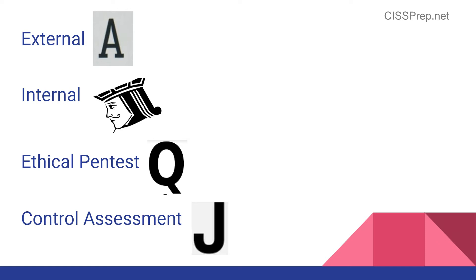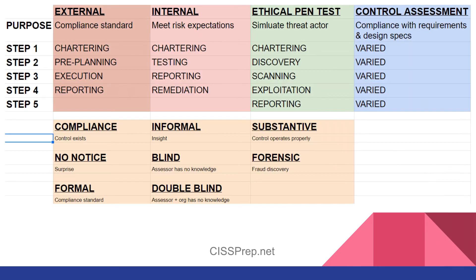You do have to be a little bit flexible when looking at exam questions — this is not an exact science. For example, ethical pen tests are almost always external, so you have to pay attention to context. If the question asks you to choose an audit type, you really need to look at the scenario being presented. The best way to organize this information is through a chart that simplifies it a little bit.